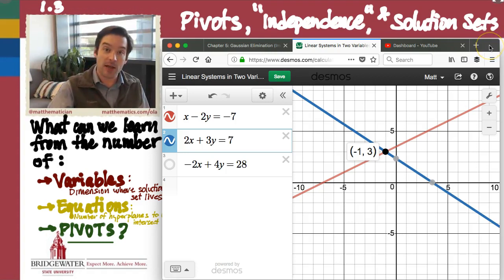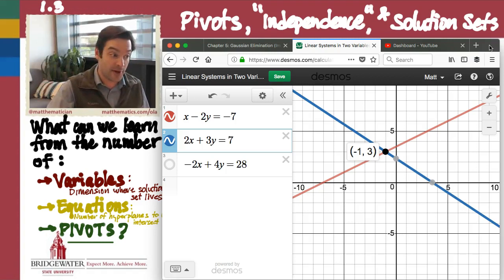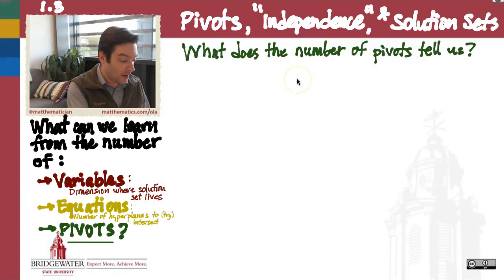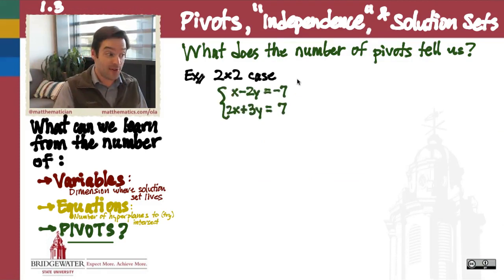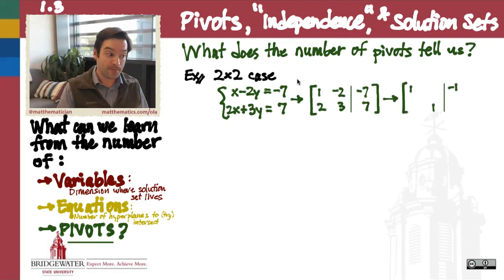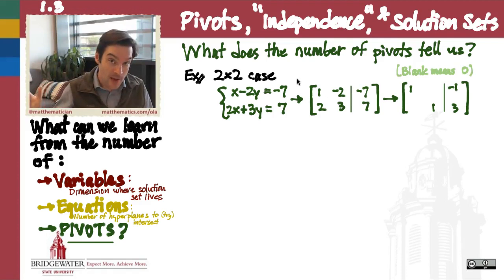What does that look like when we actually do the work of finding a solution to that system using the tools that we have in linear algebra? The first thing we would do is take the system and write it in its augmented matrix form, and then use elementary row operations to row reduce it as far as possible.